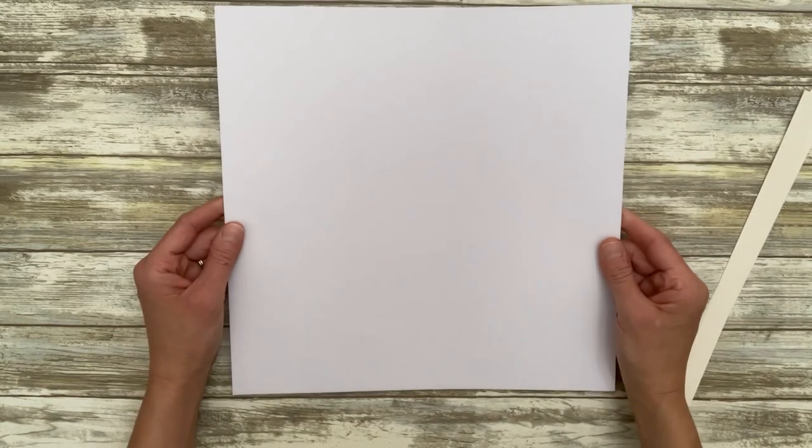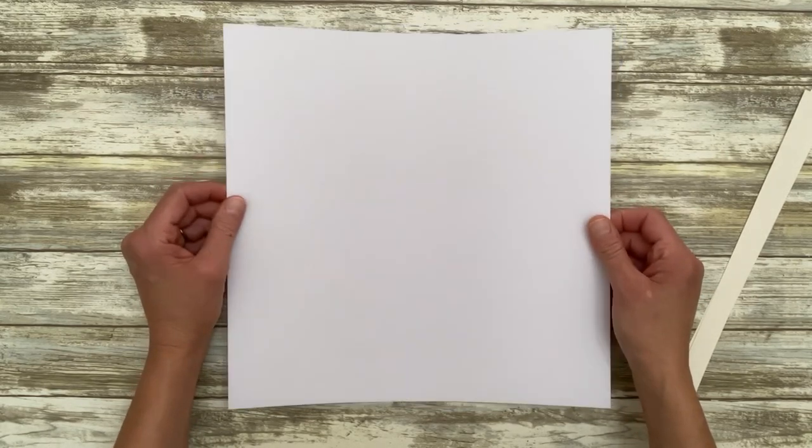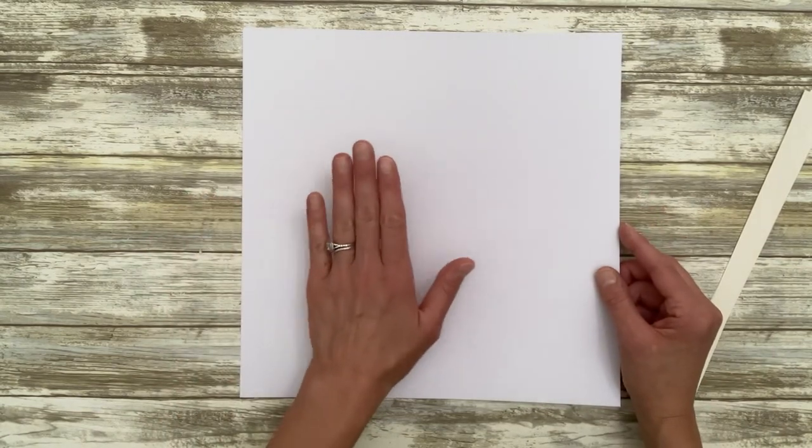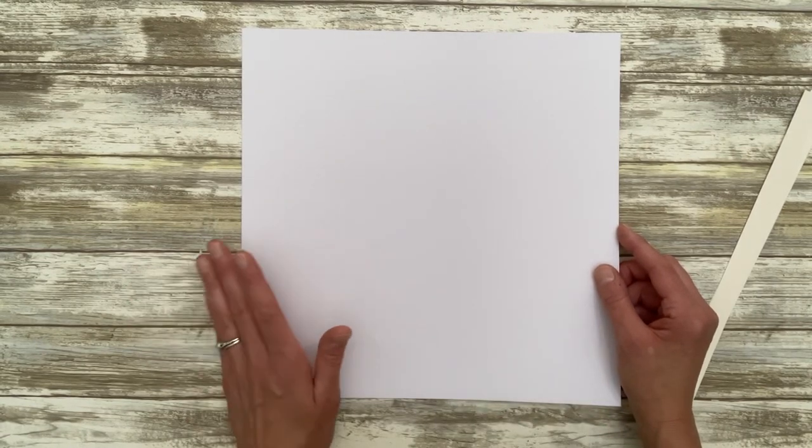For your pages, you're going to need 110 pound cardstock, so it's thick. I would highly recommend the thick 110 pound pages because they're sturdy and you are going to be flipping through them in your three-ring binder.